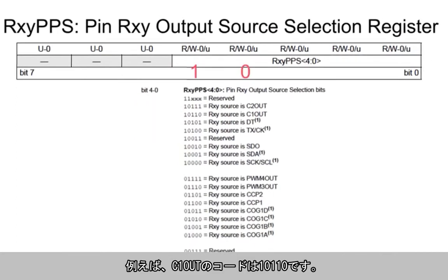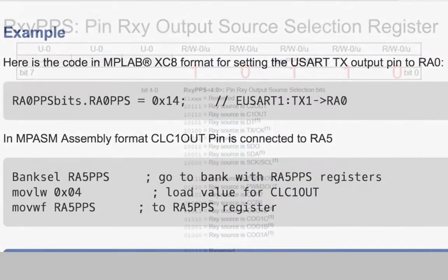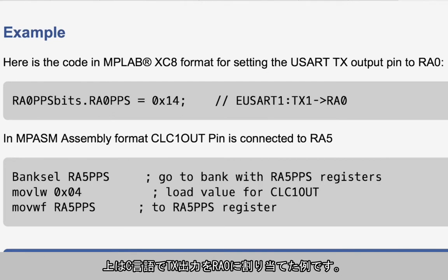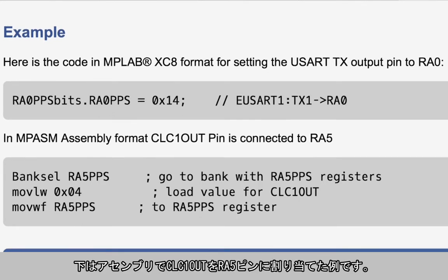For example, for C1 out, we would enter 10110. Here are a couple of code examples. The first one is in C, showing the transmit output connected to the RA0 pin. And the second one is in assembly, with the CLC1 output connected to the RA5 pin.